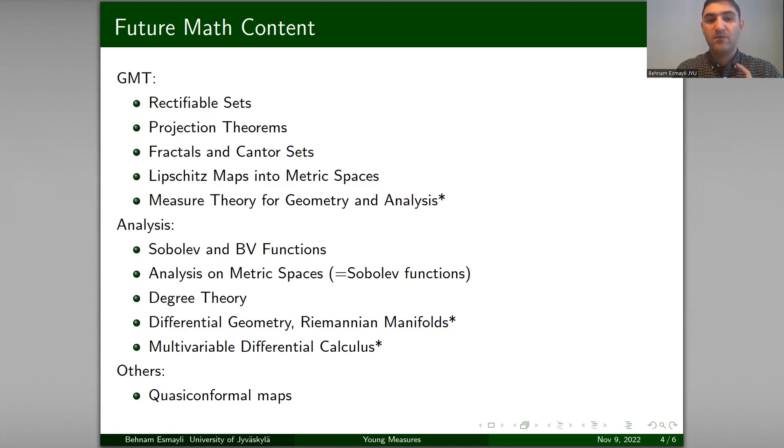In analysis, we can talk about Sobolev and BV functions in Euclidean spaces. We can talk about them on metric spaces. That is a hot theory developed since late 90s. It's very new but also very topical at the moment. Degree theory is one of my favorites. I know a few things about it I can talk about.